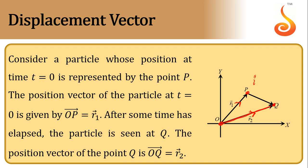OP1 equals R1, that is the initial position vector, and the final position vector OQ equals R2. Now the vector which points from P to Q, this vector is called the displacement vector.